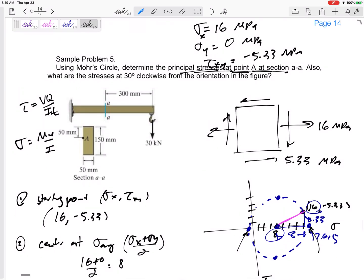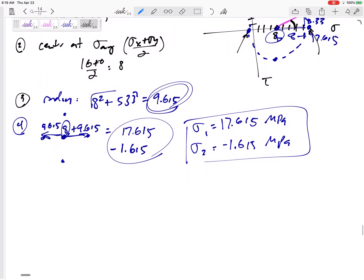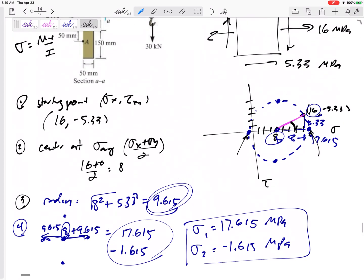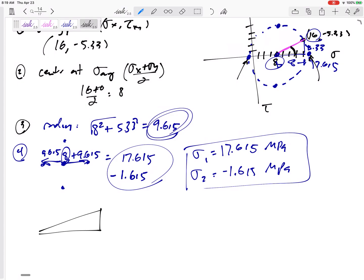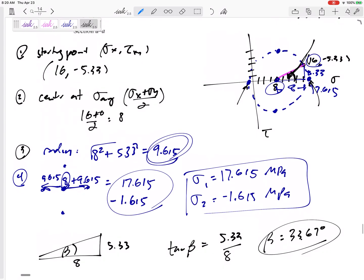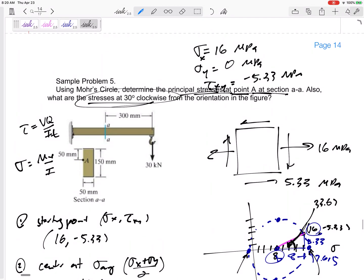So those are the principal stresses. Does it ask for theta P? It doesn't ask for theta P, the principal orientation. But I'm probably going to need to go ahead and find that angle I'm at on Mohr's circle because I'm about to go 30 degrees clockwise from the orientation shown. So even though it's not asking for theta P, I'm going to go ahead and find that angle. Let me find that angle right here from this triangle.